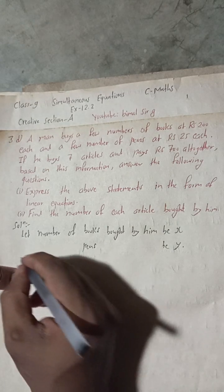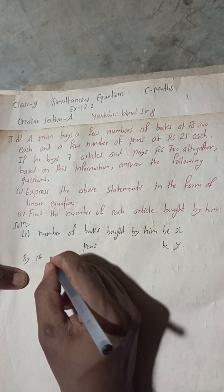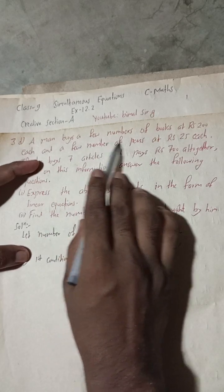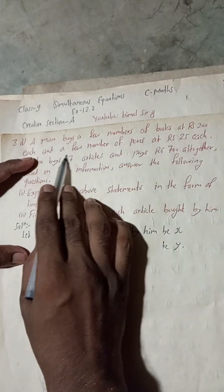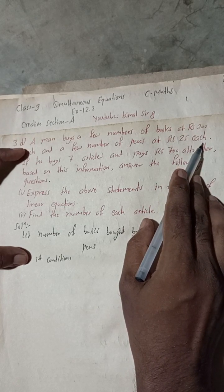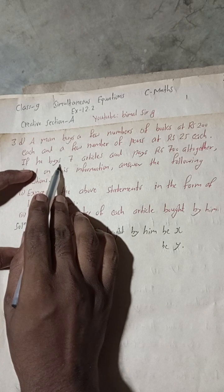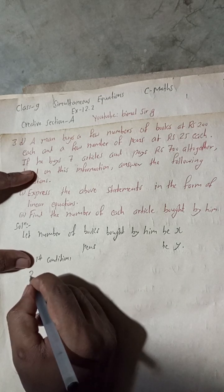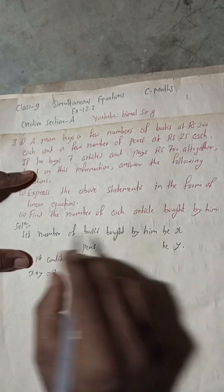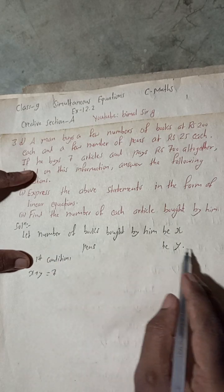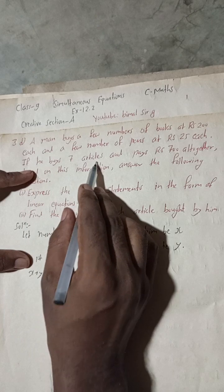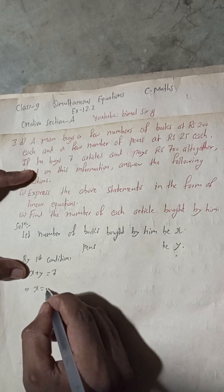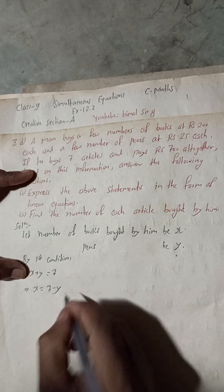By the first condition — a man buys a few number of books at Rs200 each and a few number of pens at Rs25 each. If he buys 7 articles, that means the number of articles will be: x plus y is equal to 7. Because he bought x books and y pens, and the total is 7 articles, so x plus y equals 7. This gives us x is equal to 7 minus y — this is equation 1.